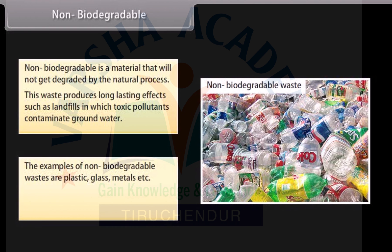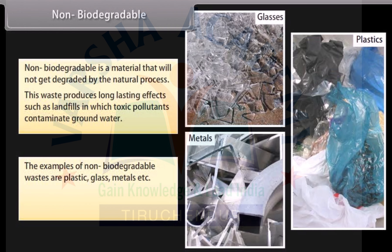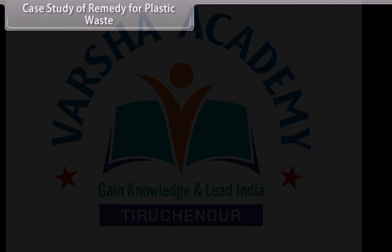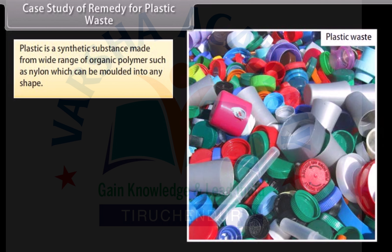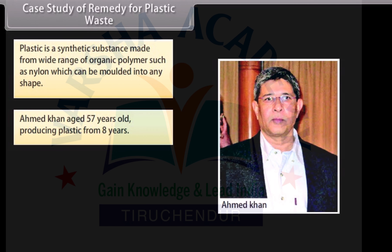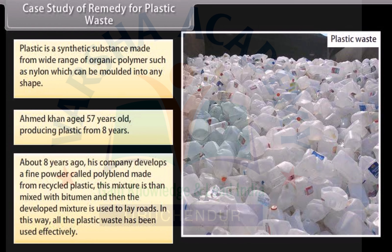Examples of non-biodegradable wastes are plastic, glass, metals, etc. Some dangerous chemicals and toxins are also non-biodegradable. Case study of a remedy for plastic waste: Plastic is a synthetic substance made from a wide range of organic polymers such as nylon, which can be molded into any shape. Ahmed Khan, aged 57, has been producing plastic products for 8 years. About 8 years ago, his company developed a fine powder called Polyblend made from recycled plastic. This mixture is then mixed with bitumen and used to lay roads, effectively using all the plastic waste.